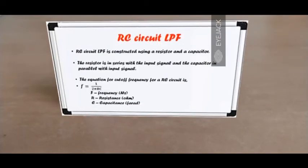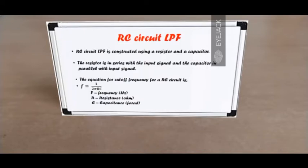A capacitive LPF is constructed using a resistor and a capacitor. The resistor is in series with the input signal and the capacitor is in parallel with the input signal. The equation for the cutoff frequency for an RC circuit is F equals 1 over 2π times R and C, where R is the resistance measured in ohms, C is the capacitance measured in farads, and F is frequency in hertz.